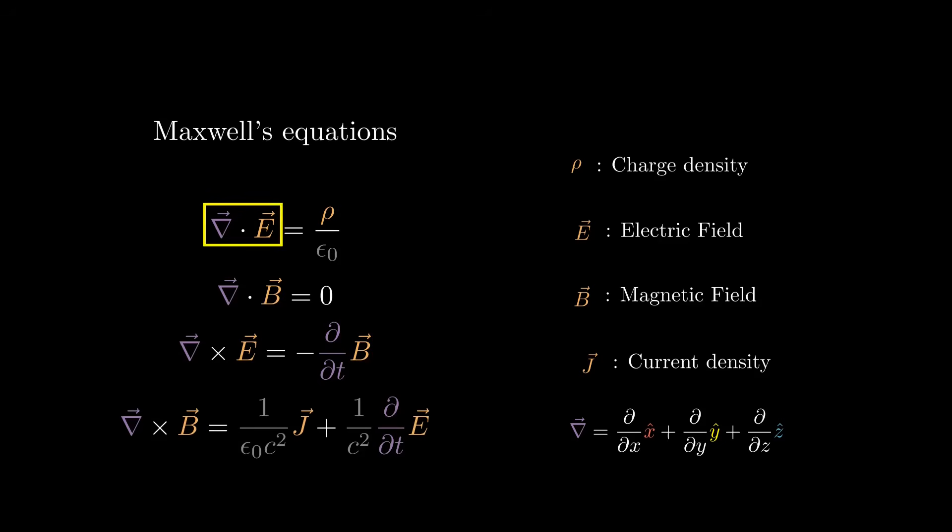The left-hand side of the first equation is a dot product between these two, and it equals a scalar. The second is also a dot product, but it equals zero. This is a way to say we are not accounting for magnetic charges.